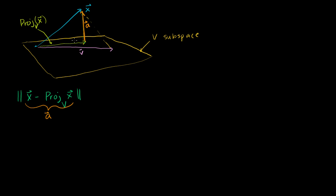My claim is that this distance a is shorter than any distance from x to v, where v is any member of the subspace. So that's this distance right here. The vector x minus v looks like that — if you take v plus x minus v, you're going to get to x. So what I want to show is that the length of a — the difference between x and its projection — is always going to be less than the distance between x and any other vector in the subspace, x minus v. So let's see if we can prove that.